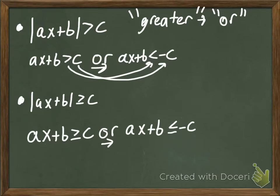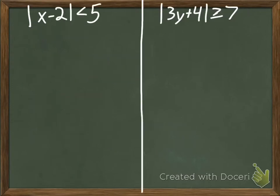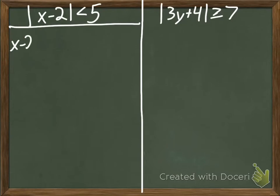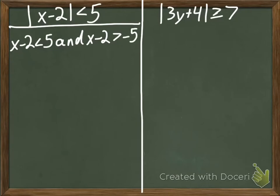So let's actually do some examples with these and get out of the theory. Here's two examples. Our first one is the absolute value of x minus 2 is less than 5. Less than means it's going to be 'and.' So we get x minus 2 is less than 5, and x minus 2 is greater than negative 5. Our inequality flips and our sign flips for our C. And now we just solve these like we would any inequality.